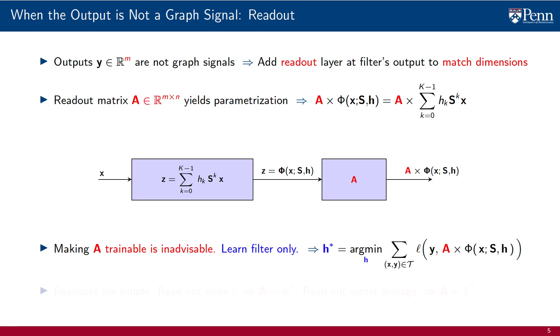Thus, the ERM problem is not much different from the one before. It is in fact the same, but with a change in the loss function. Instead of comparing observed outputs y to the output of a graph filter, we compare them to a readout of the output of the graph filter.